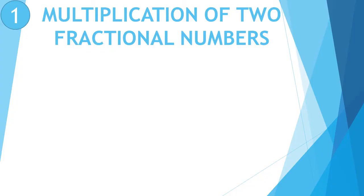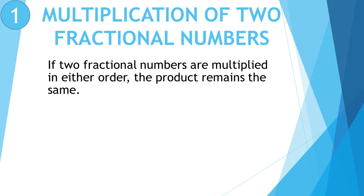Our first property is Multiplication of 2 Fractional Numbers. If 2 fractional numbers are multiplied in either order, the product remains the same. What is 2 upon 3 multiply 1 upon 5? In order to multiply 2 fractional numbers, we multiply the numerators and the denominators separately. So write down 2 multiply 1 upon 3 multiply by 5. Do the multiplication: 2 1s are 2 and 3 5s are 15, so the fraction is 2 upon 15.